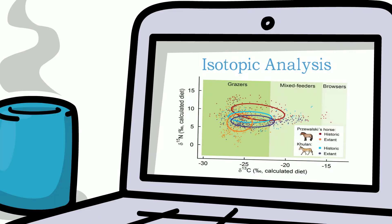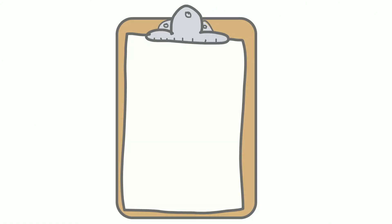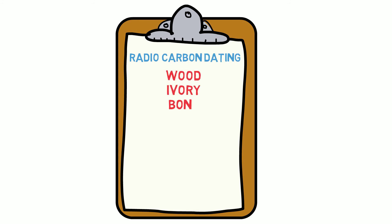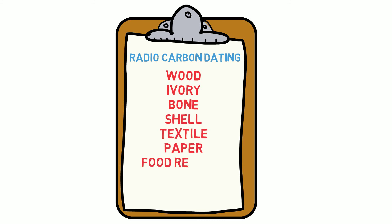An expensive method for determining the age of organic-based material, known as C14 radiocarbon dating, has been successful in dating wood, ivory, bone, shell, textile, paper, food remains, seeds and grains.